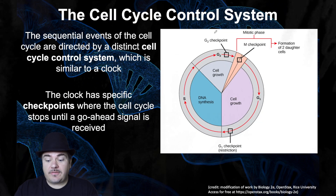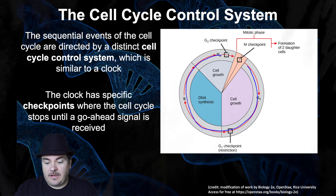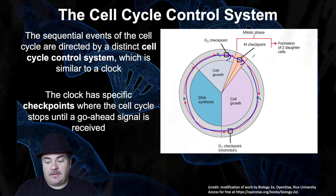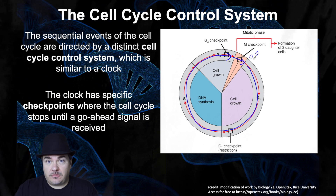This is a figure of the cell cycle that we've seen before. The cell cycle is made up of interphase, which is G1, S, and G2, and then M phase, which is mitosis and cytokinesis. You start with one cell, go through interphase, mitosis, and cytokinesis, and you end up with two cells. That would be one round of the cell cycle, and that's how you get new cells.